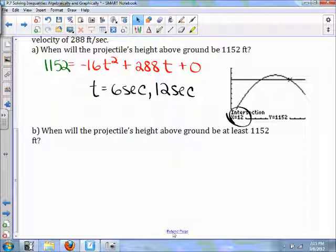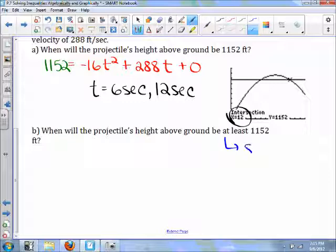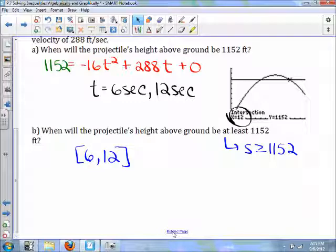Now the next question for part B, when will the projectile's height above ground be at least 1152 feet? Well, it says at least. That means it's got to be greater than or equal to 1152 feet. That's the lowest it's going to be. That will be in between 6 seconds and 12 seconds. That will be this area of the graph right there.